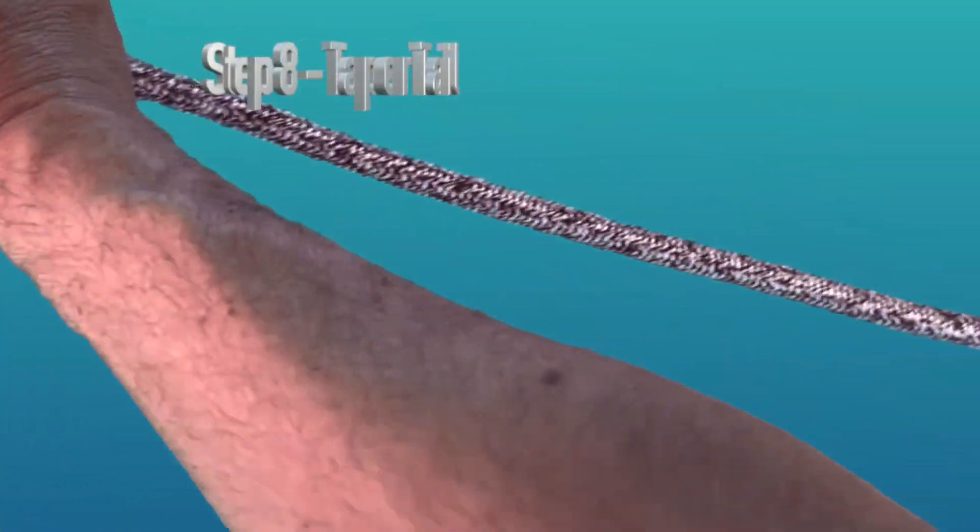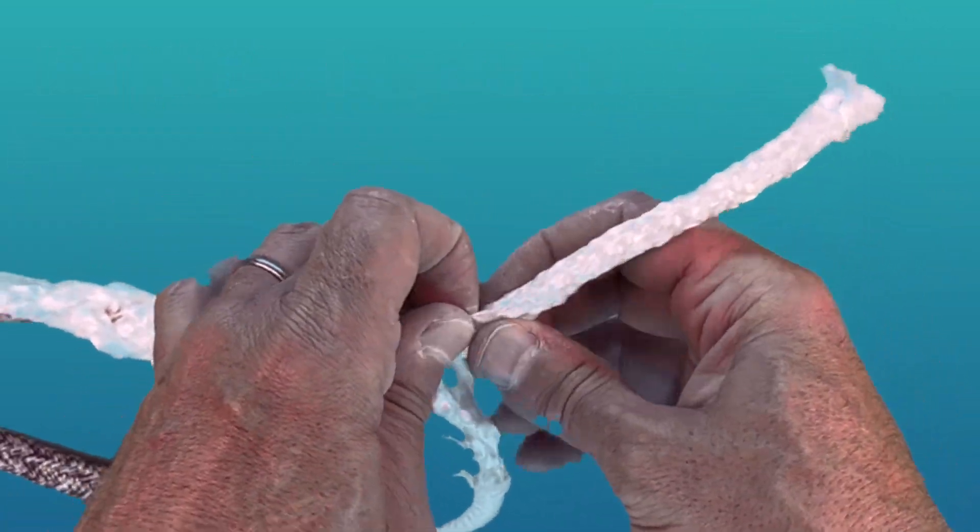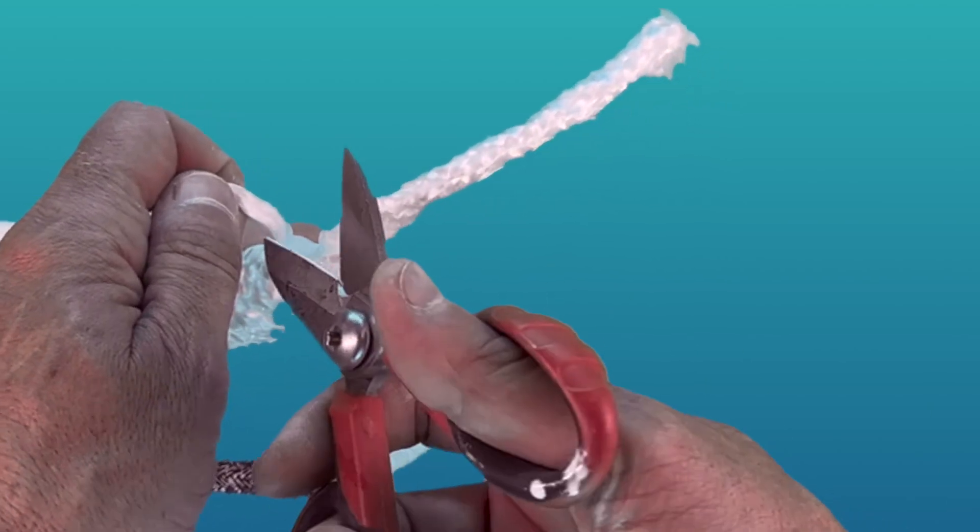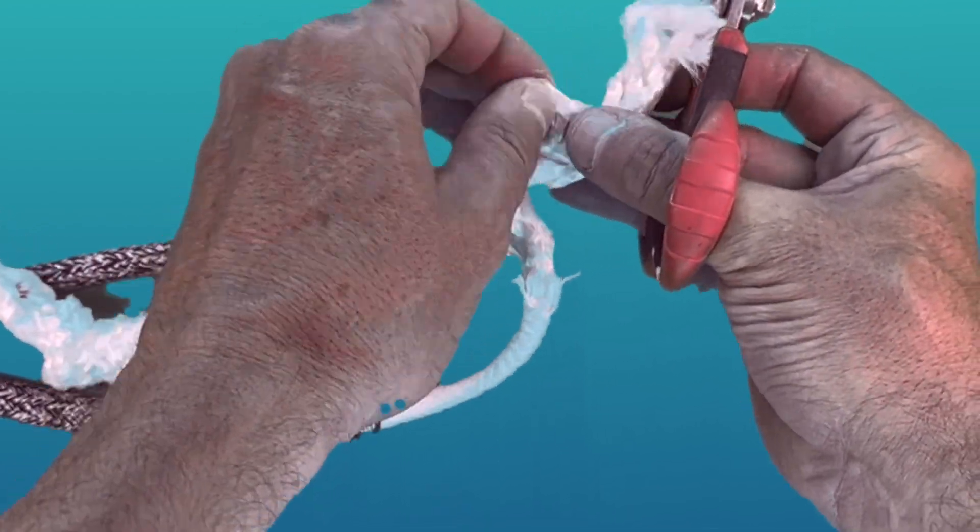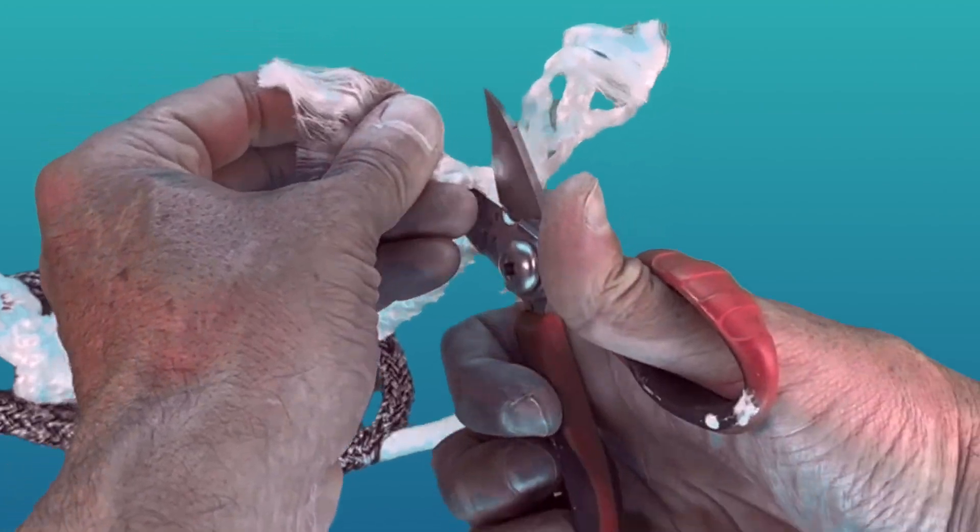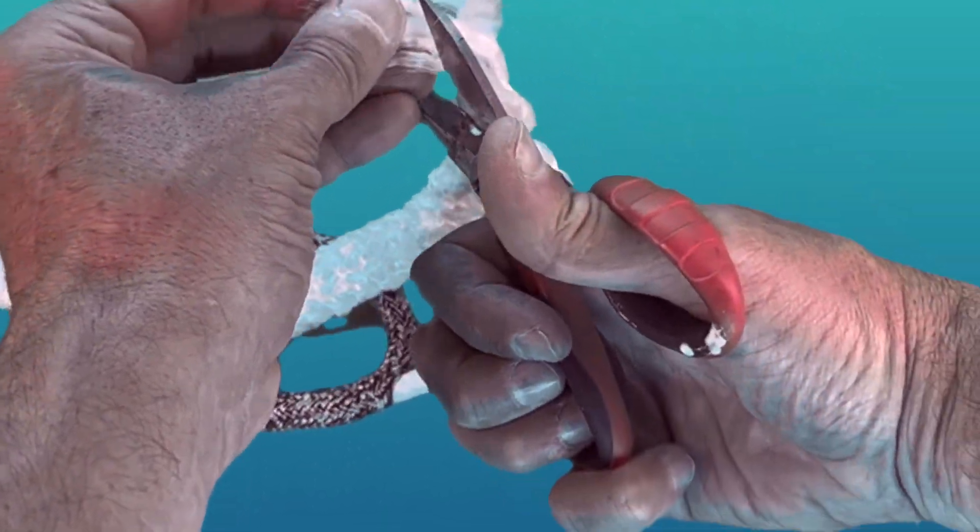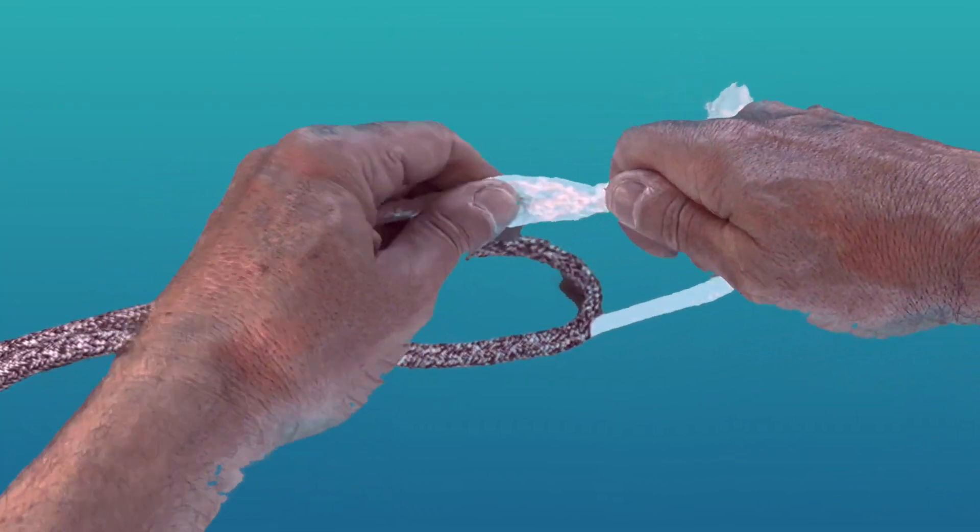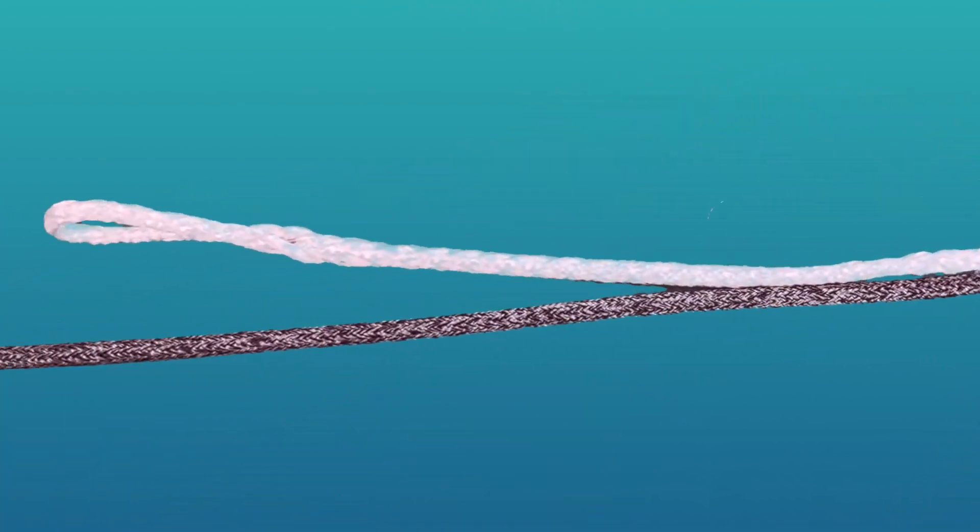For step number eight, you want to taper the working end of the buried Dyneema to ensure a smooth splice for the final bury. To do this, you pull out the working end as far as you can and grab a thread of the Dyneema and clip it off with your shears. You want to repeat this four or five times, moving up a couple of centimeters each time, pulling out a thread and then trimming it off until you get all the way to the end. At which point you can then just slide the outer core over the working end to bury the end of the splice and complete your Brommel locking splice on the Dyneema core.